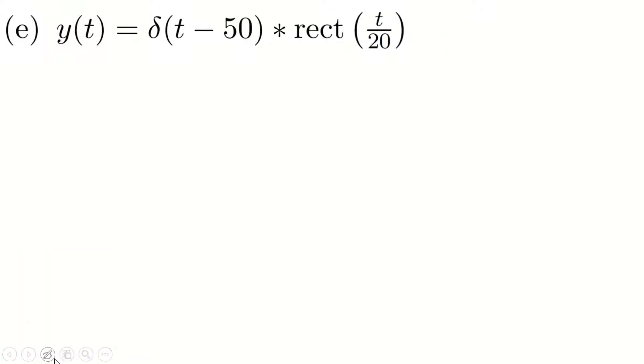Let me write it here. This y(t) equals the integral from negative infinity to infinity of δ(τ - 50) times rectangular of (t - τ)/20 dτ. Okay, from the sampling property.